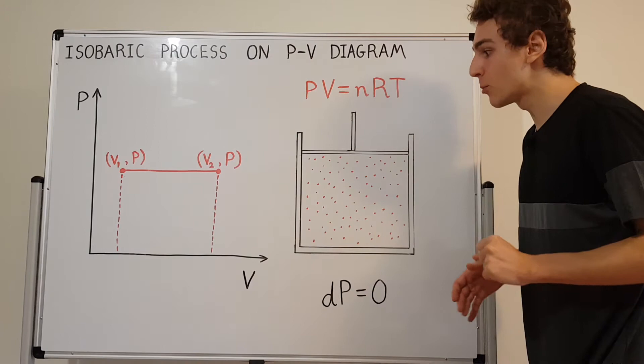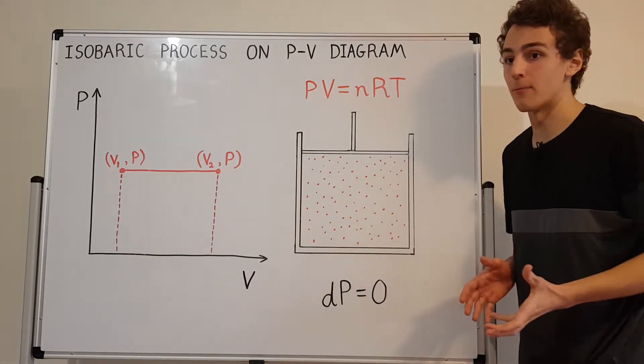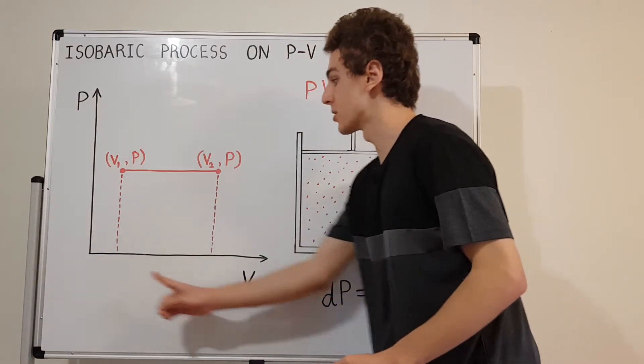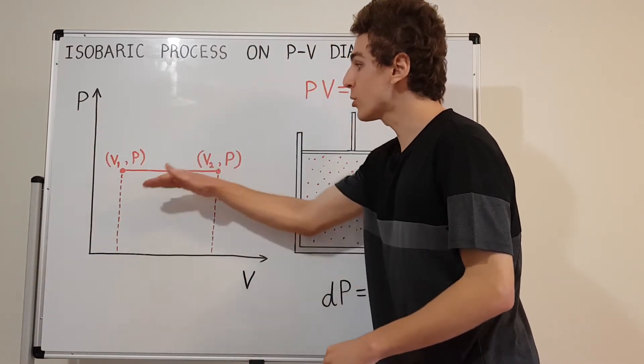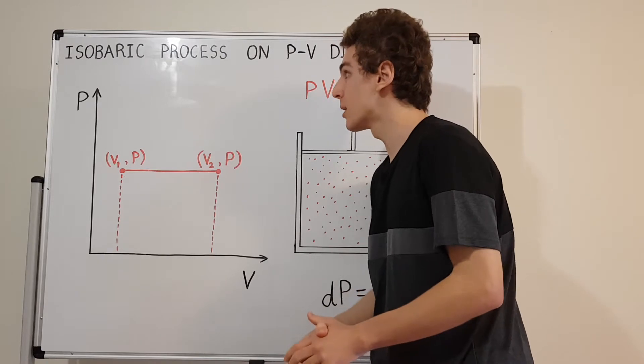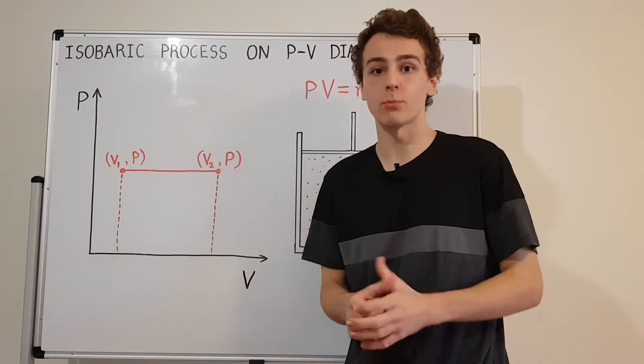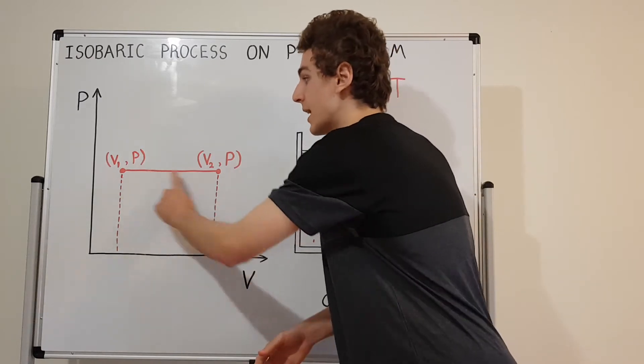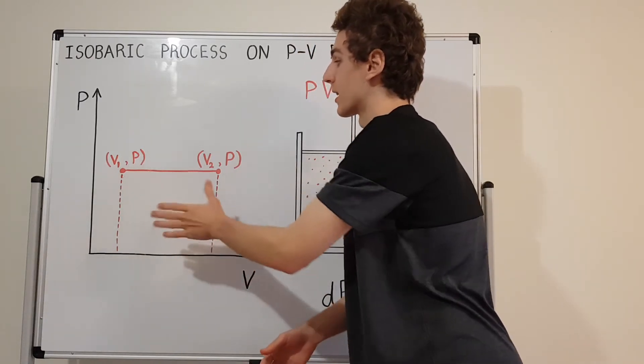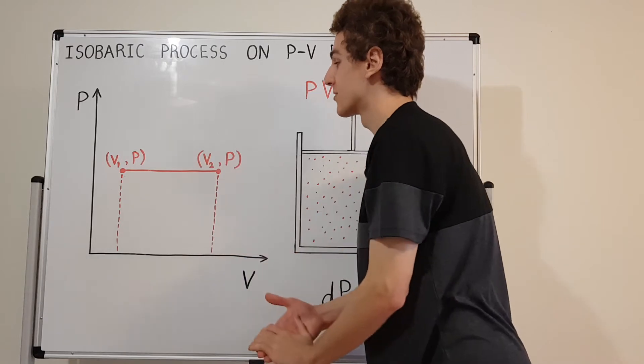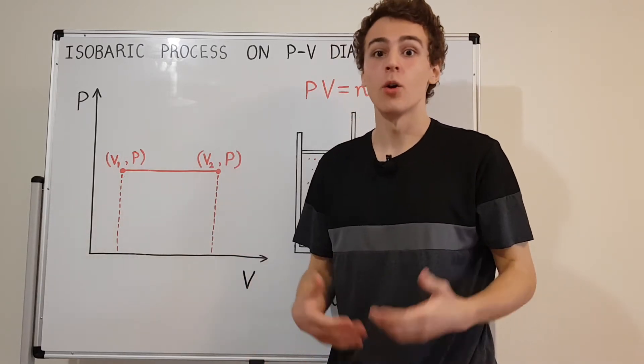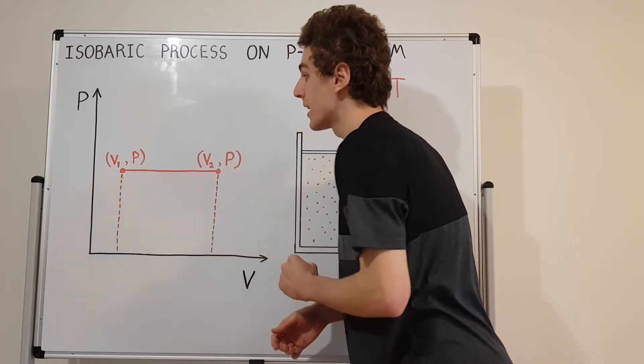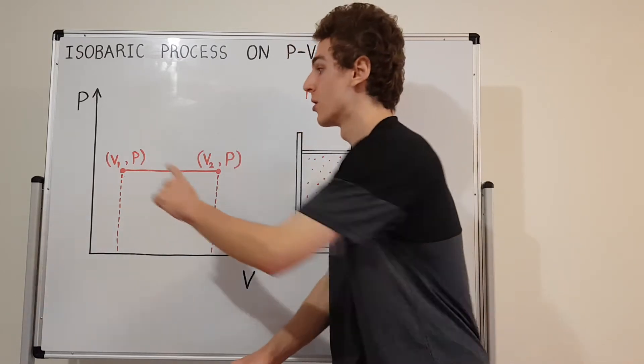Let's have a look at what this looks like on the PV diagram. P is the vertical axis, V is the horizontal axis. A horizontal line on the PV diagram corresponds to an isobaric process. Sometimes this is called an isobar. No other shape will satisfy the isobaric process. Why? Because all points on a horizontal line share the same pressure coordinate.